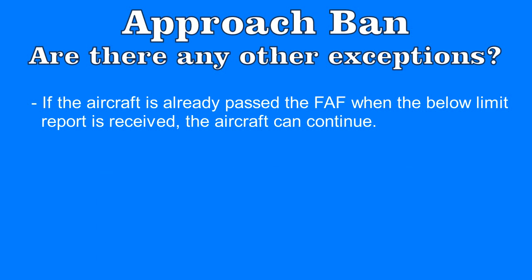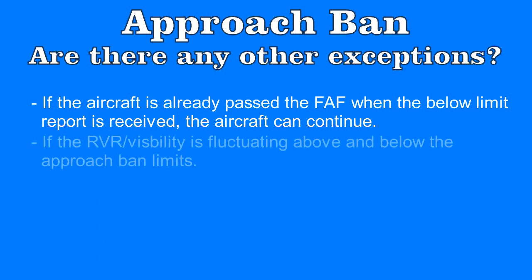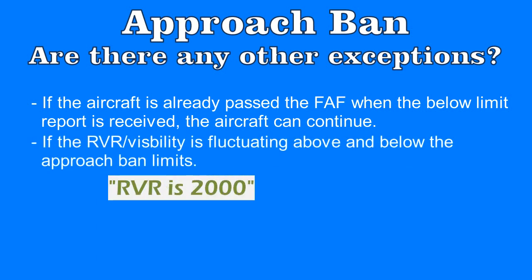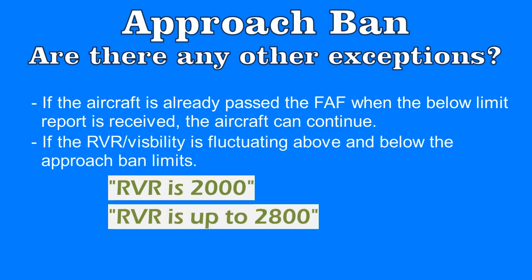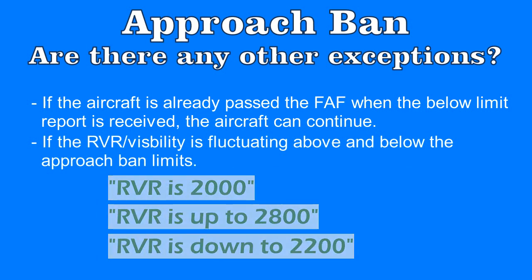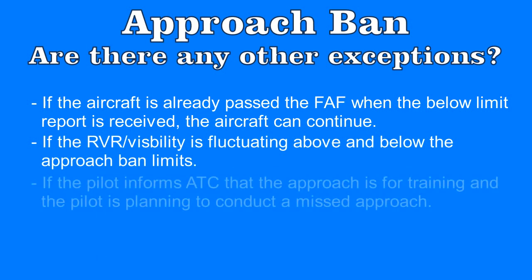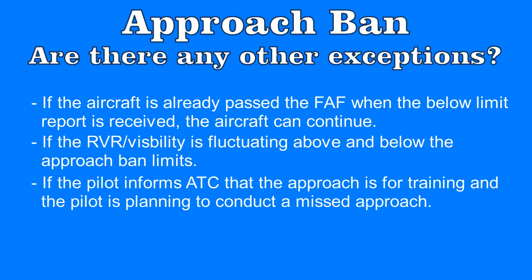Another common exception is that if the RVR or visibility is fluctuating above and below the approach ban limit, the aircraft can still continue the approach. And another common exception is that if the PIC has informed ATC that the approach is for training purposes only, and that they intend to perform a missed approach at or above the decision height or minimum descent altitude, then the aircraft can continue the approach.